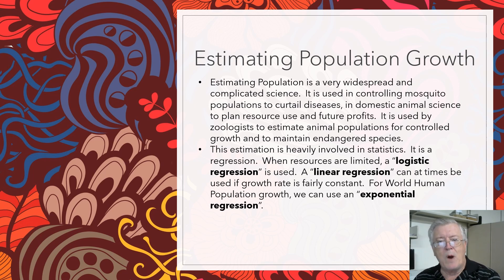Estimating population is very widespread and complicated science. It's used in controlling mosquito populations to curtail diseases, domestic animal science, to plan resource use and future profits. It's just used everywhere. Even for controlled growth of animals here where I live, they worry about deer populations growing unchecked and wolf populations and so forth. It's also used to maintain endangered species, like the whales or polar bears.